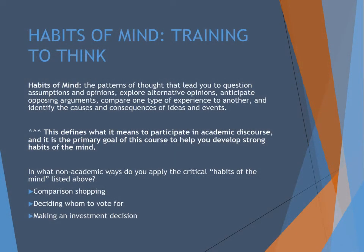So how do you start writing like this? You have to develop habits of mind. A habit of mind is a pattern of thought that leads you to question assumptions and opinions, explore alternative opinions, anticipate opposing arguments, compare one type of experience to another, and identify the causes and consequences of ideas and events. A lot of that language lines up with our definitions of academic arguments — this is essentially what it means to participate in an academic discourse community. You also develop habits of mind for everyday things, like when you're shopping or deciding who to vote for. You have a strategy for doing these things, and the next step is to identify that strategy and think about it critically.